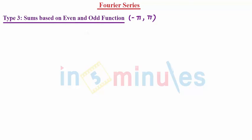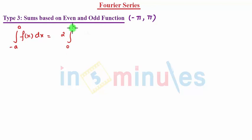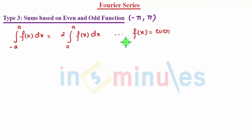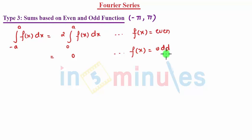Even and odd functions work on the property: the integral from minus a to a of f(x) dx can be written as 2 times the integral from 0 to a of f(x) dx when f(x) is even, and as 0 when f(x) is odd.